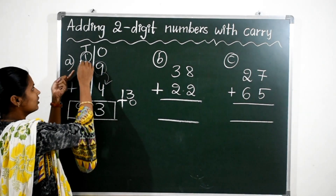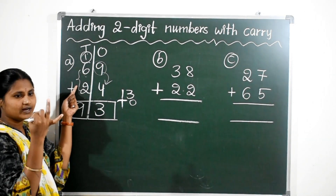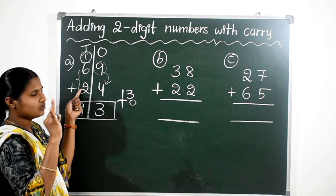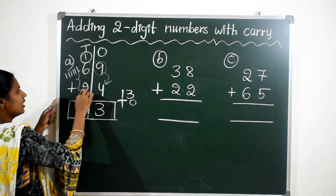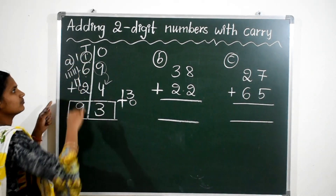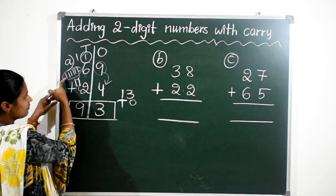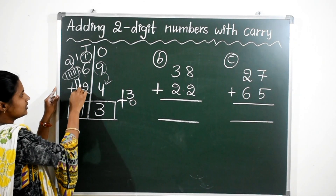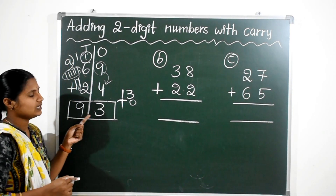Here the 1s place values are 8 and 2. 8 is the big number. Keep 8 in mind; 8 after 2 more numbers: 9, 10. We got 10 — a 2-digit number. So the 1s place value is 0, and the 10s place value is 1. Write 0 in the 1s place and carry this 1 ten to the 10s place.